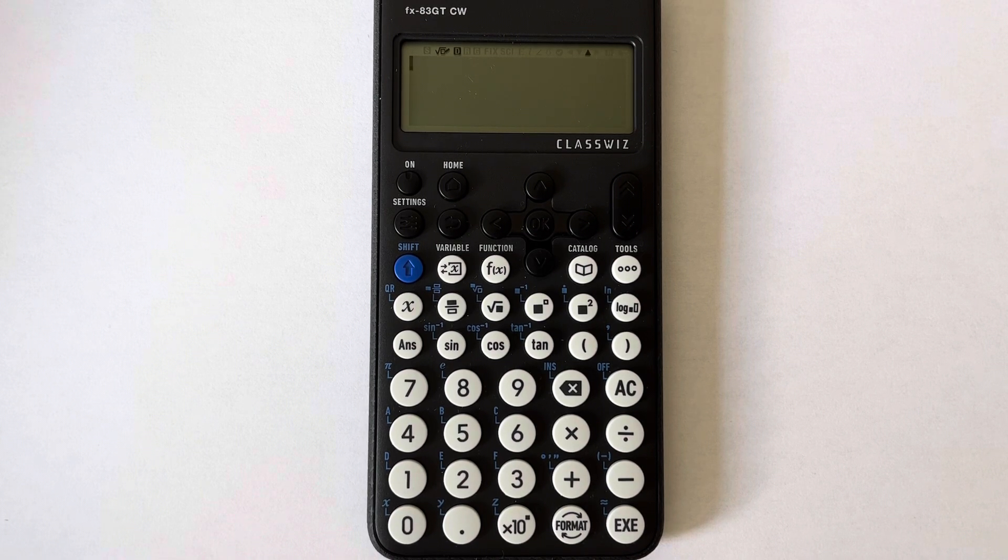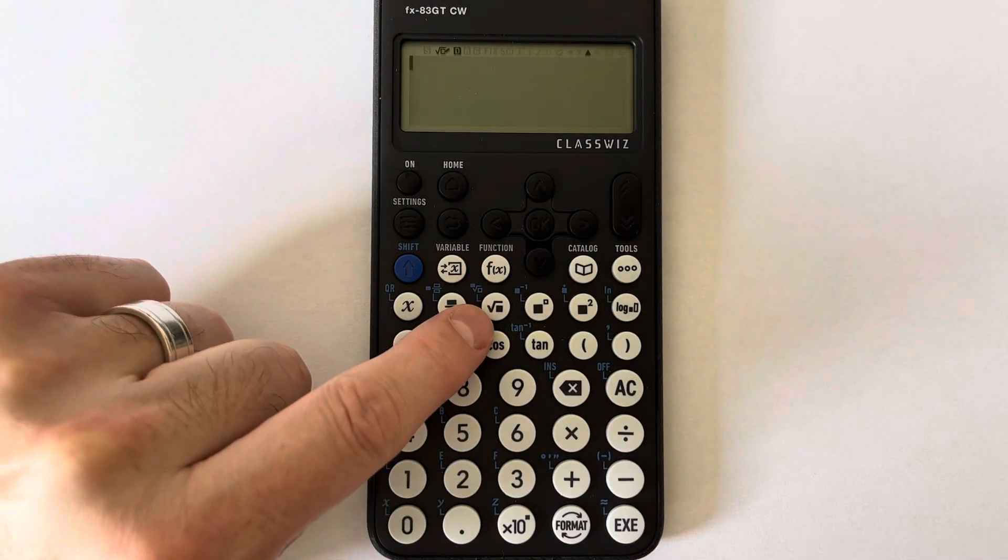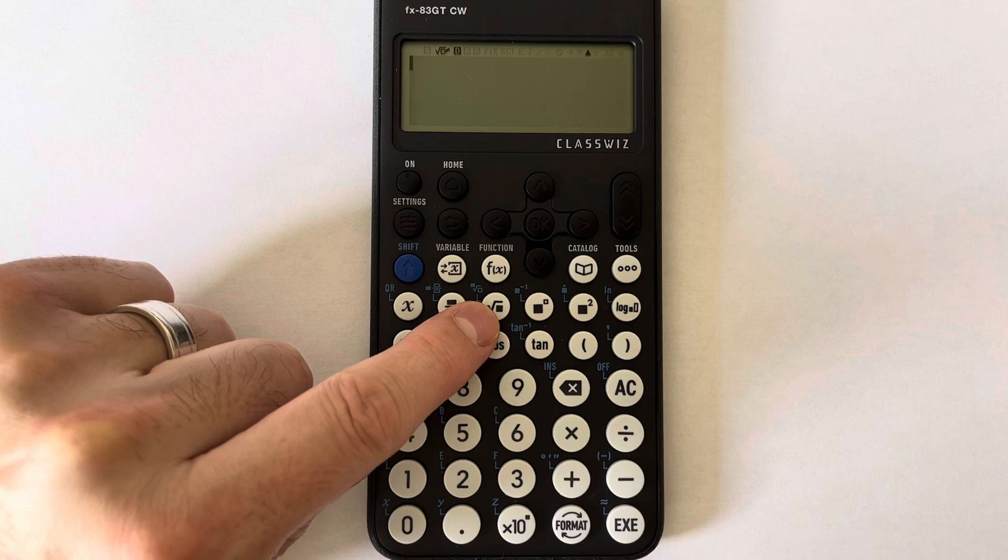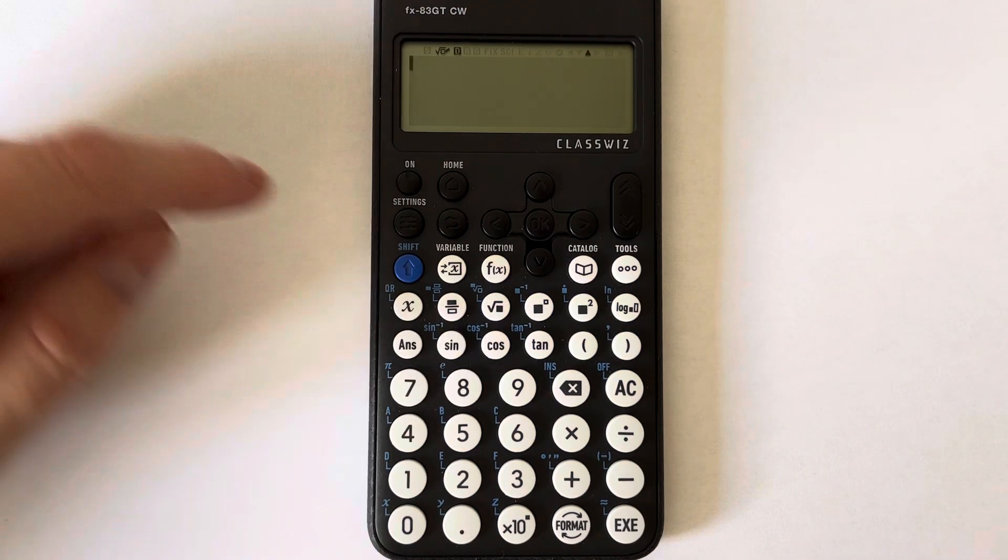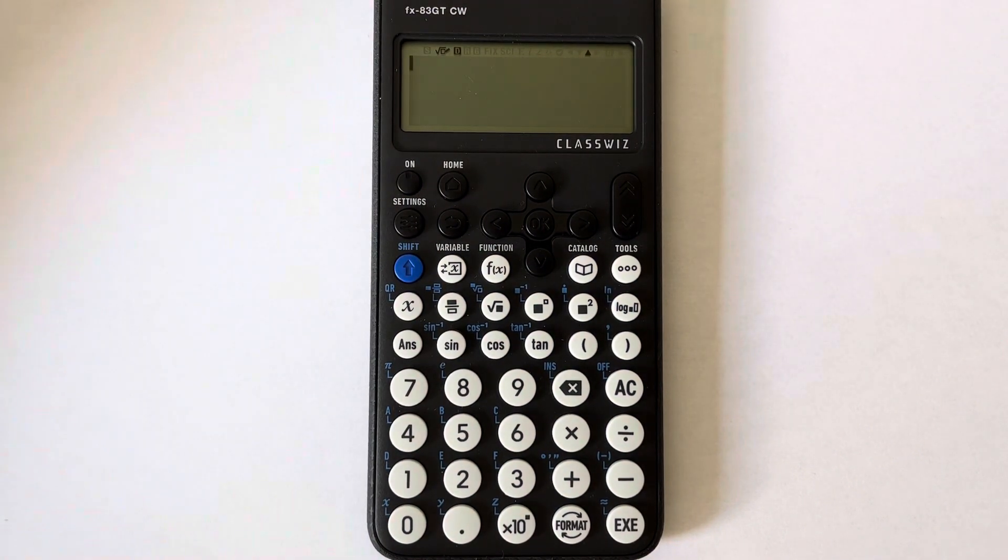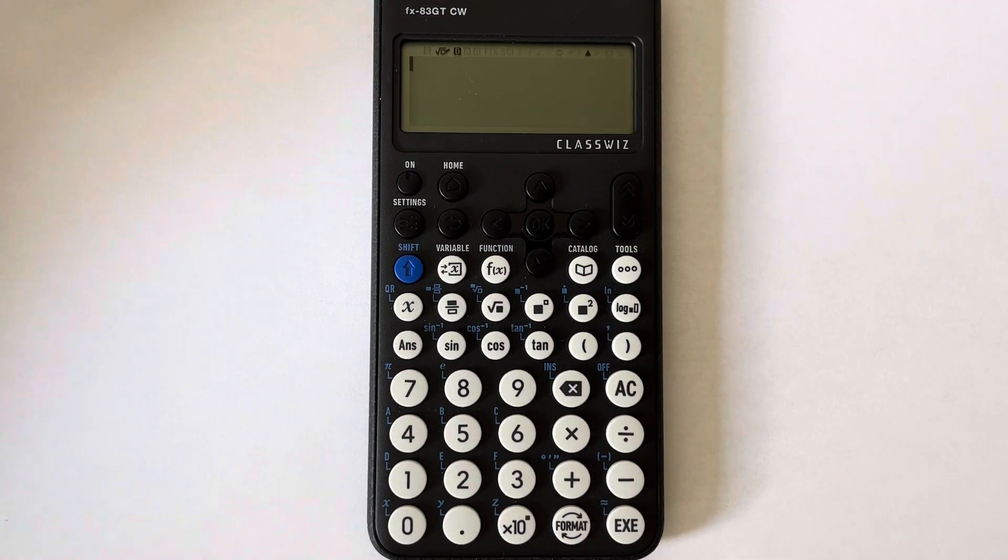But we can do it by using the second function on the square root key, and we just need to put a three on the root sign. Let's have a look at working out the cube root of 27.